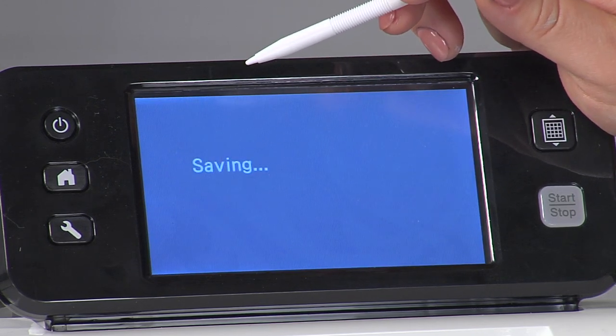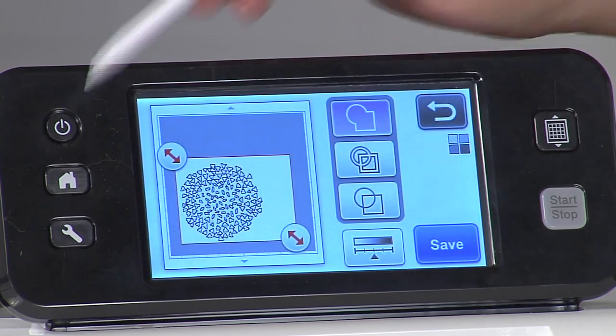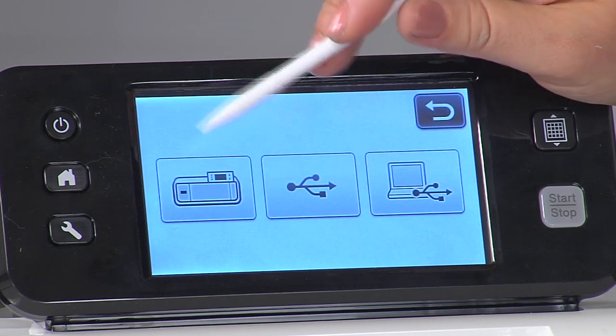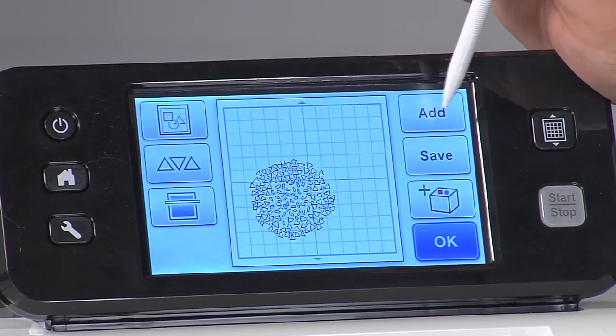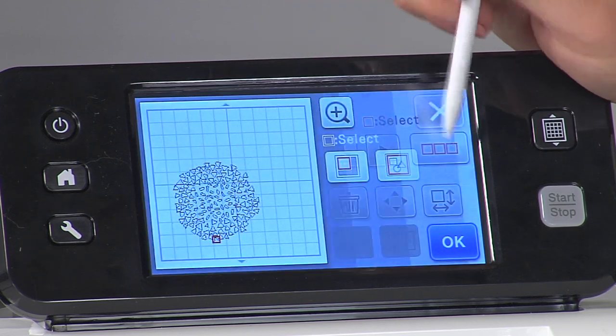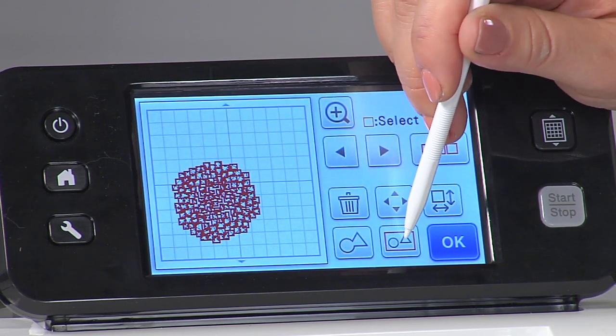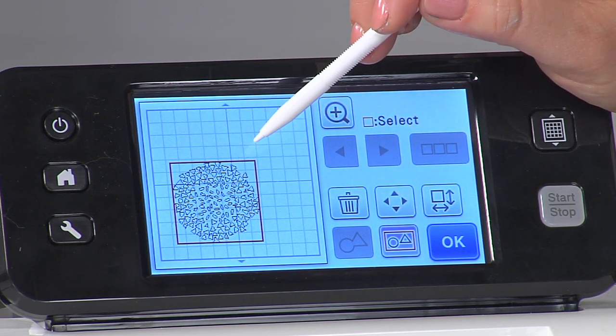There we go. Now all I need to do is retrieve it. So we're going to go home, pattern, save data from the machine. Here we go. Now I want to group all of these pieces so that I can move it, resize it, do whatever I want. So now you can see instead of a lot of little red boxes they're just one big red box.